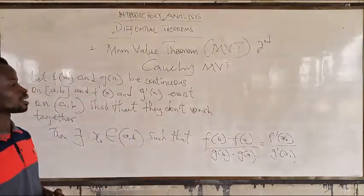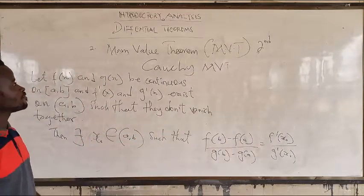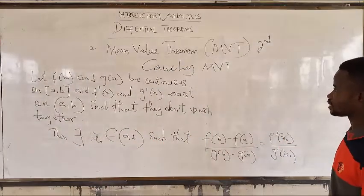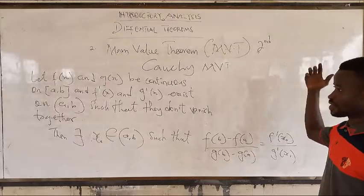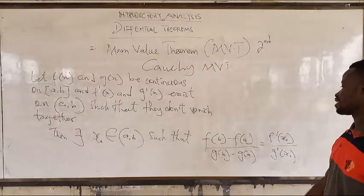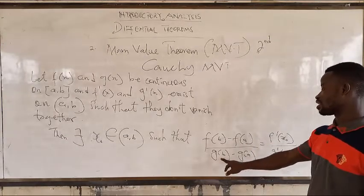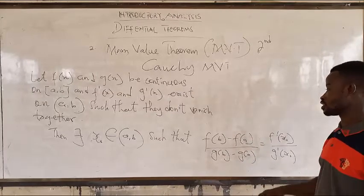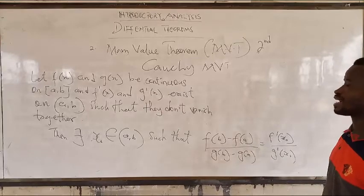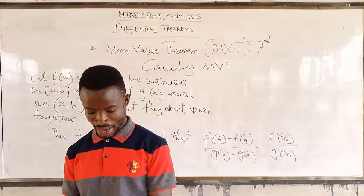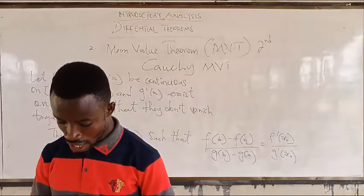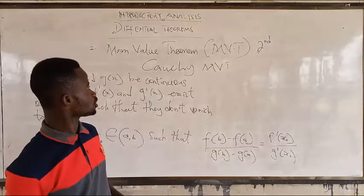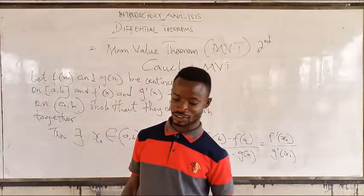That is what the Cauchy Mean Value Theorem says. It is the same as the first part, just that here we are dealing with two functions instead of one. Long story short, let's take you and see you in the next video, where we are going to do the last part of the differential series — the Intermediate Value Theorem.